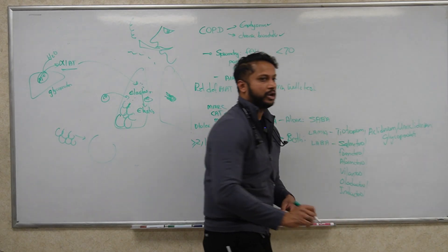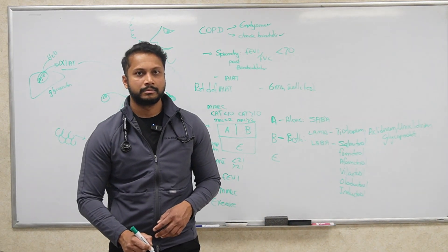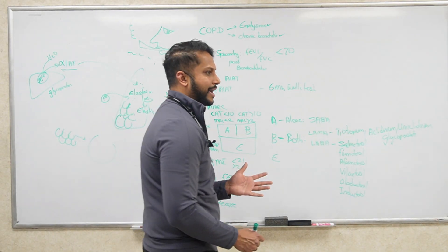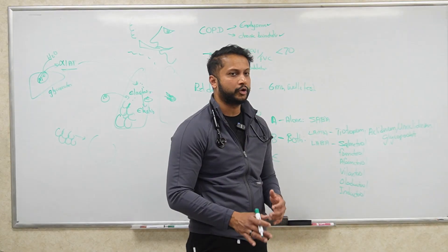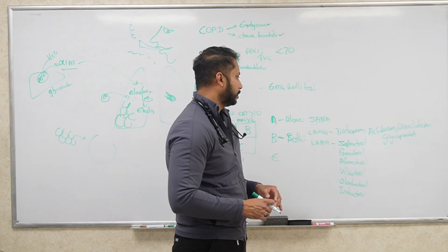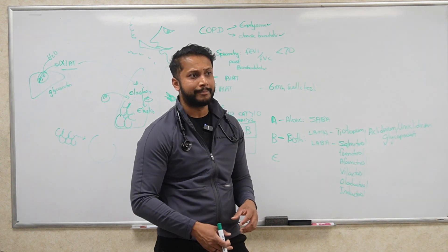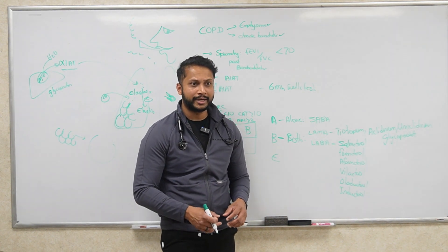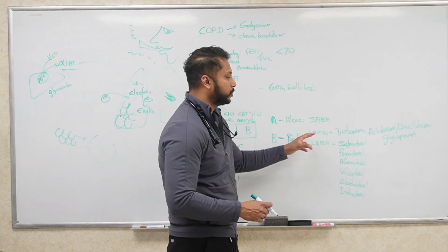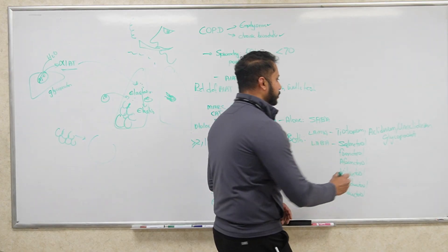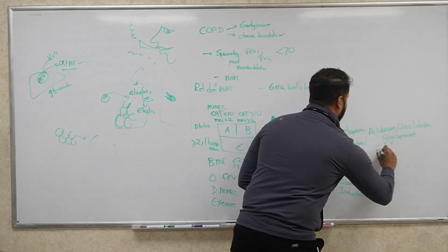What about LABAs? What drugs do we know? Salmeterol, formoterol, arformoterol, indacaterol, olodaterol, and vilanterol. These are your LABAs. Typically you're going to use combination therapy when it comes to LAMA and LABA. Is it better to use a single agent or combined agent? Combined. Is it better to give both drugs in one inhaler or separately? One inhaler is always preferred.